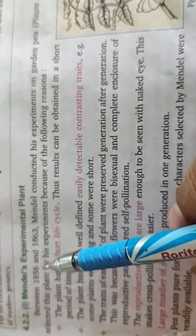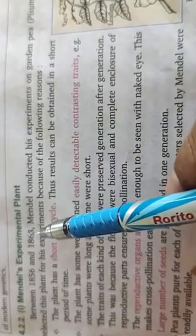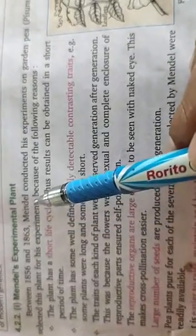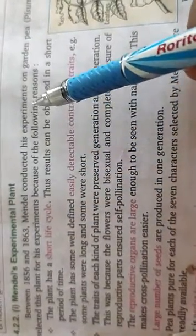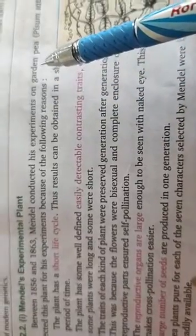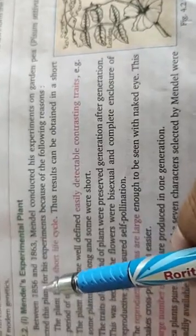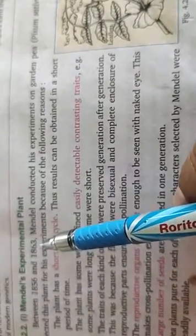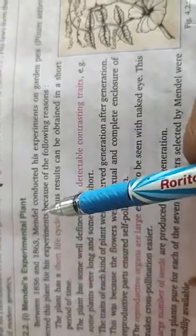Between 1856 and 1863, Mendel conducted his experiments on Garden Pea or Pisum Sativum. Mendel experimented on the pea plant called Pisum Sativum.